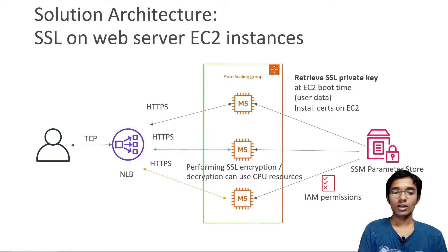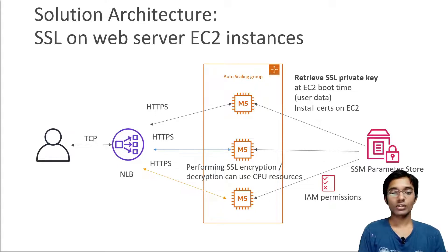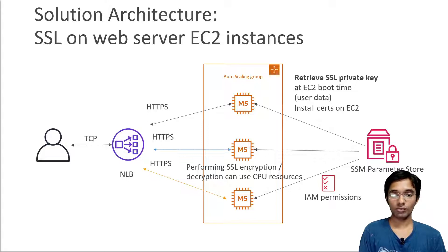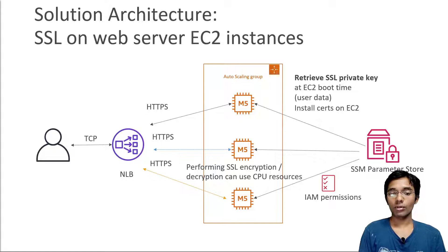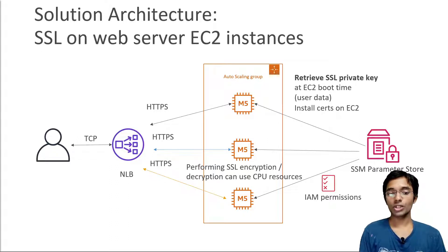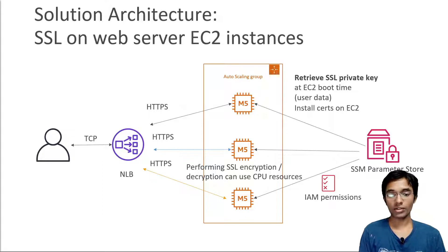This is something very simple, scalable, and it works very well. But sometimes you may want to set up SSL directly on your web server EC2 instances. In this example, we have a Network Load Balancer (NLB) with an auto scaling group, where we have a TCP connection to the NLB, but we have decided to perform the HTTPS termination at the instance level. So you need to have an HTTPS connection happening from your EC2 instances.